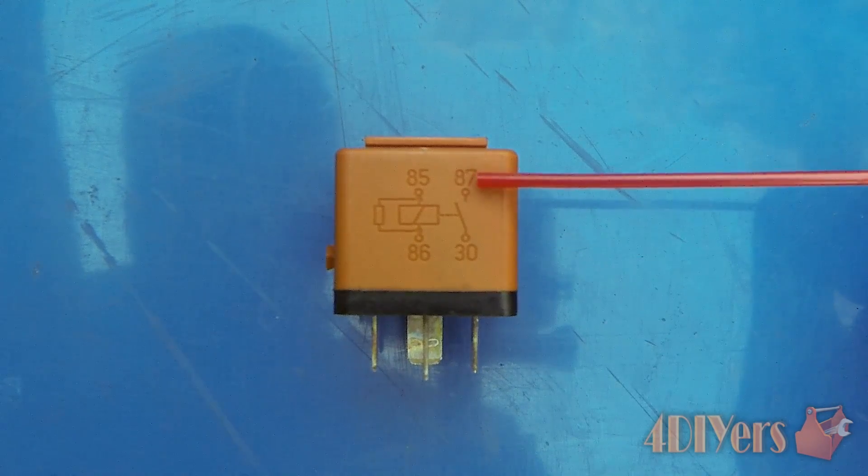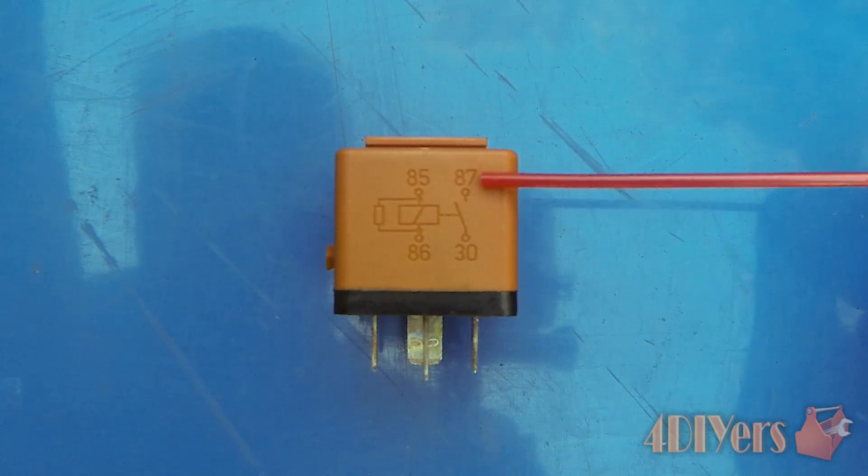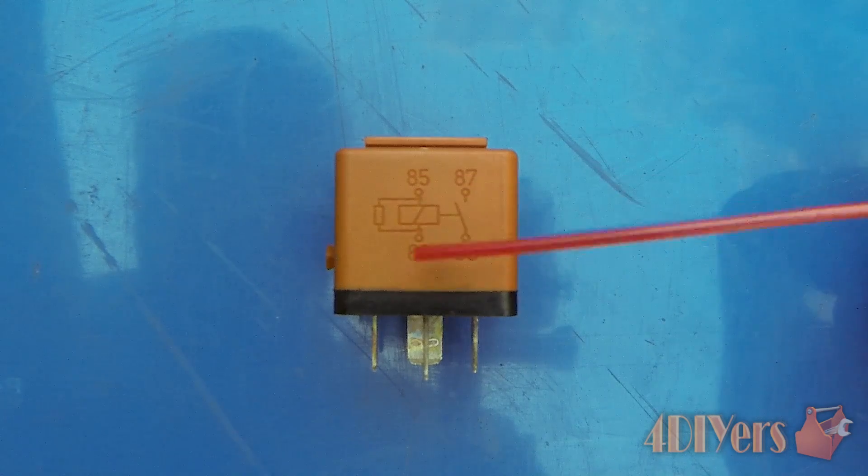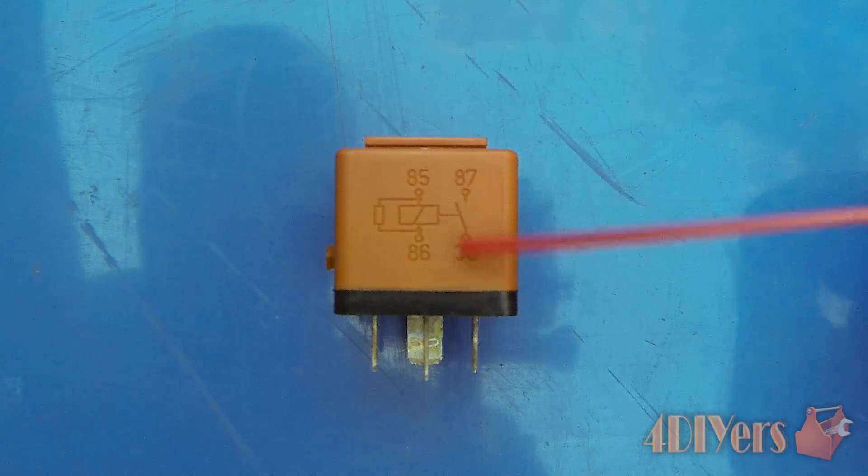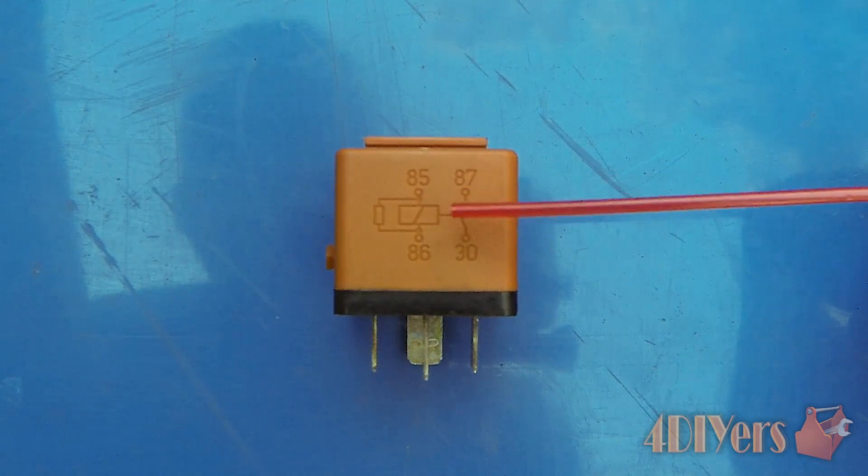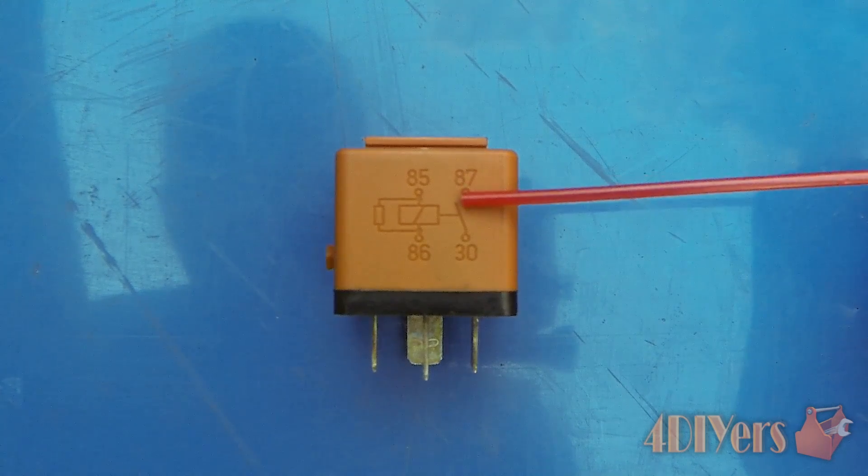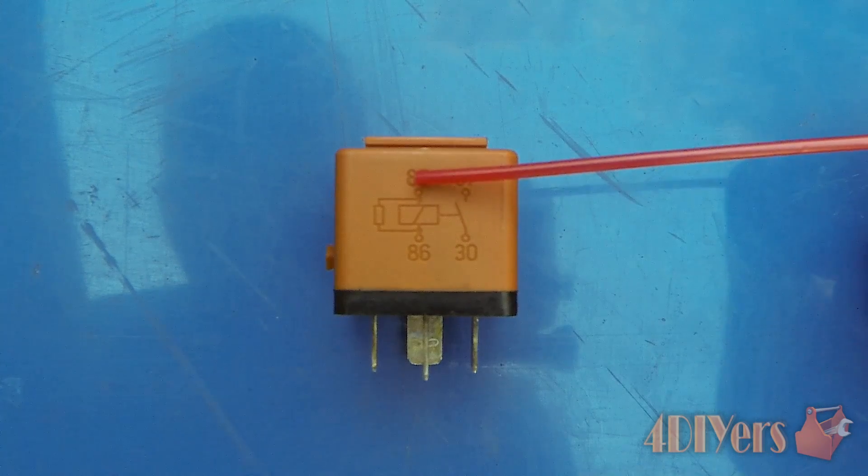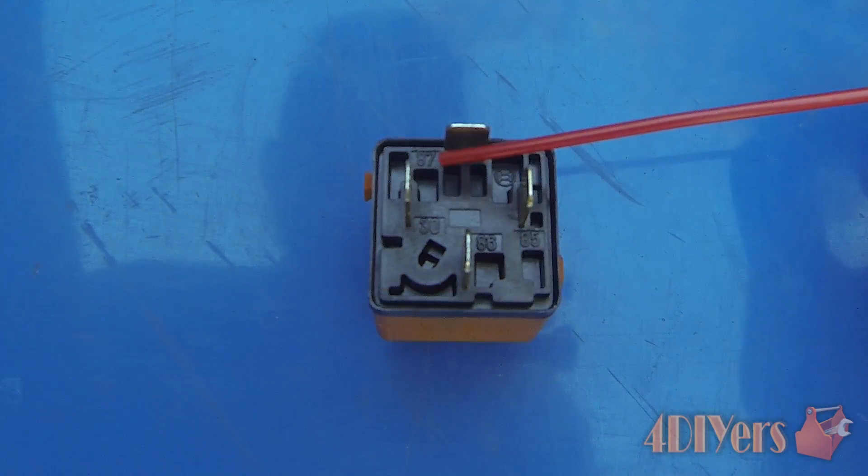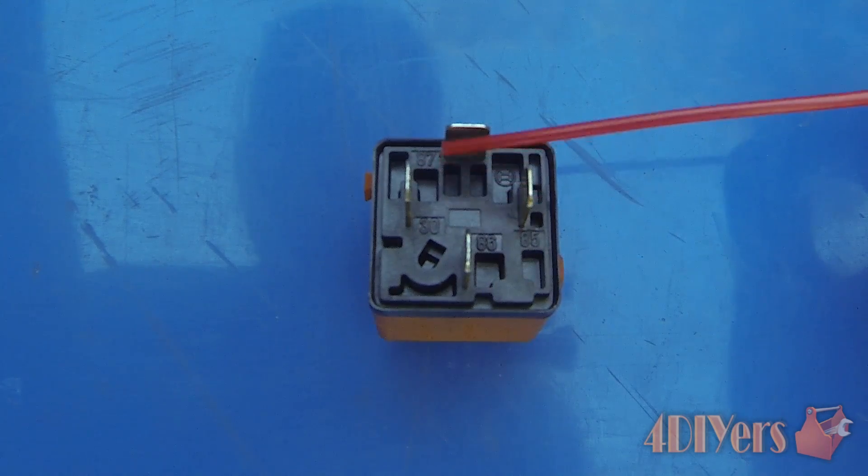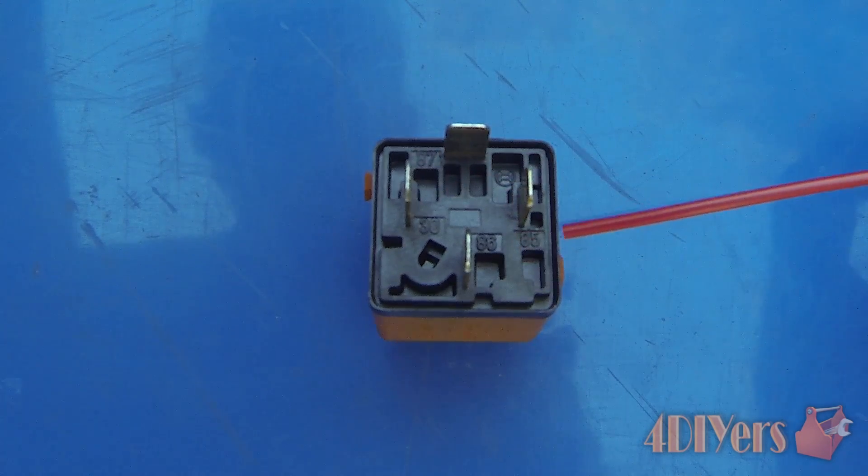30 to 87 is for the switching portion. 86 to 85 is for the coil portion which controls the switching. The switching portion is the high amperage circuit, and the coil portion is the low amperage circuit. On the diagram on the side, we have four pins on the bottom numbered 87, 30, 86, and 85.